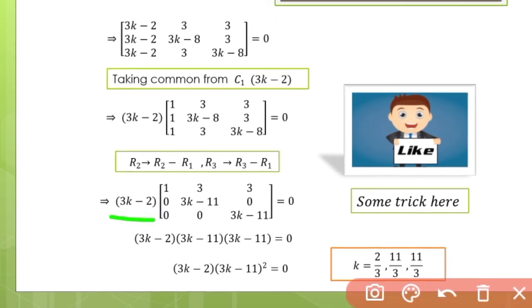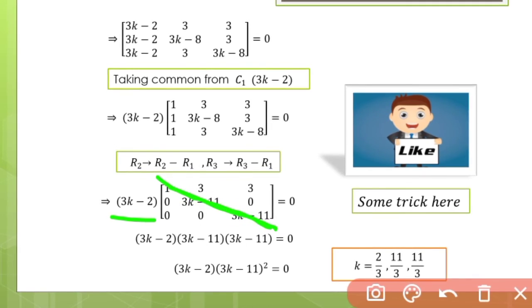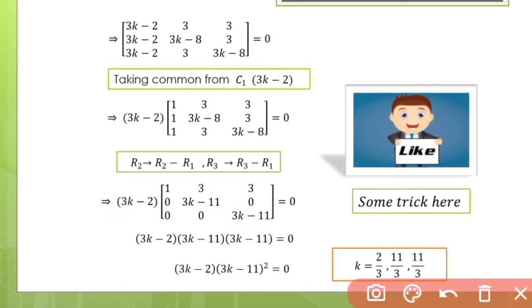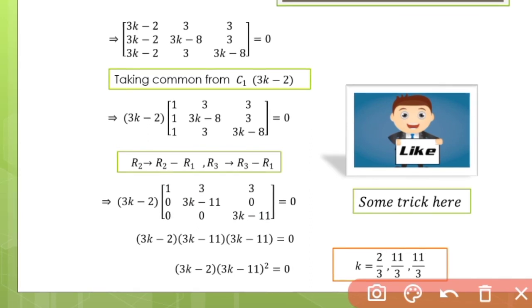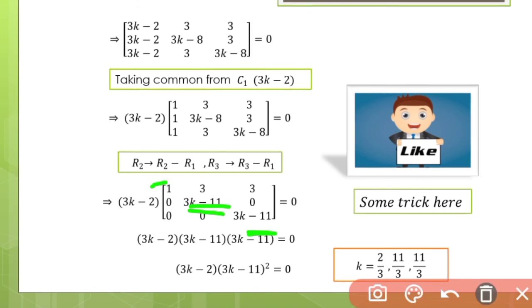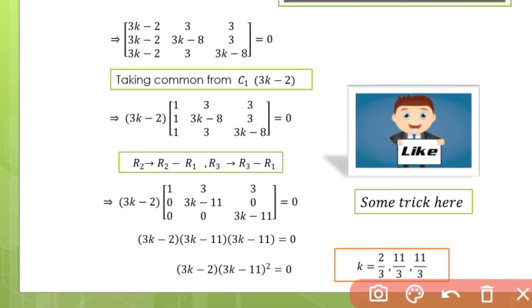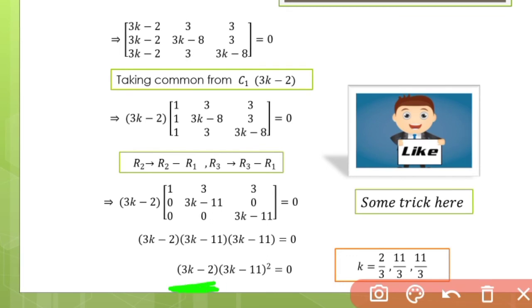Using this trick, we multiply the diagonal elements. Since the lower part diagonal is zero, we multiply the remaining diagonal elements: 3k minus 2 times 3k minus 11 times 3k minus 11 equals zero.